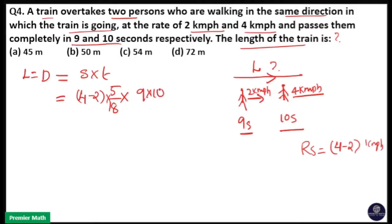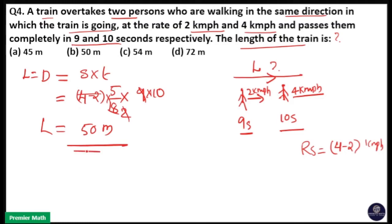So I will multiply — I will take the product of the two times. That means speed into time: 9 into 2 equals 18, and 2 and 2 will cancel. That is 5 into 10, giving 50 meters as the length of the train.